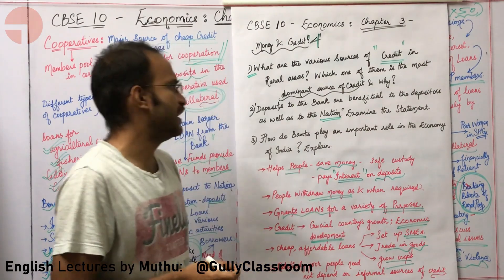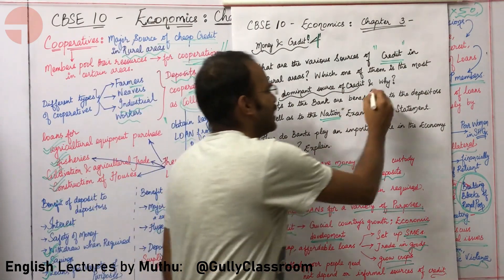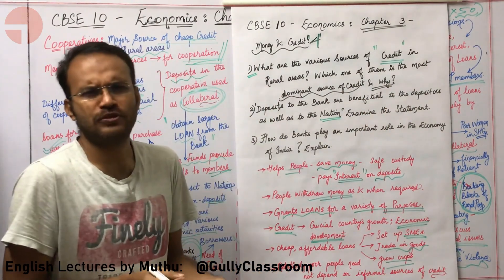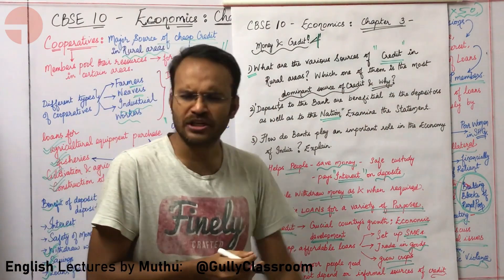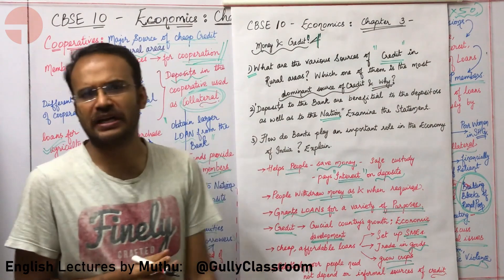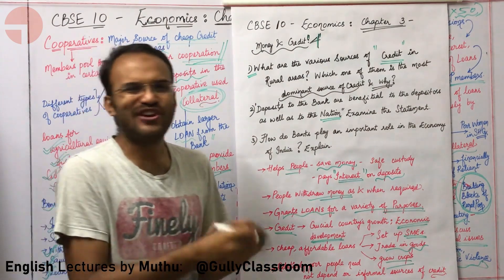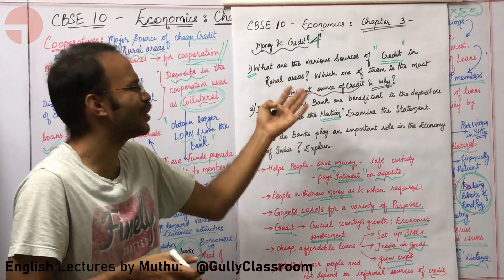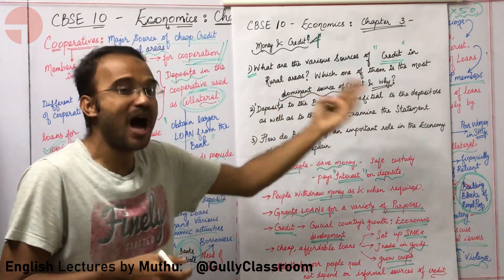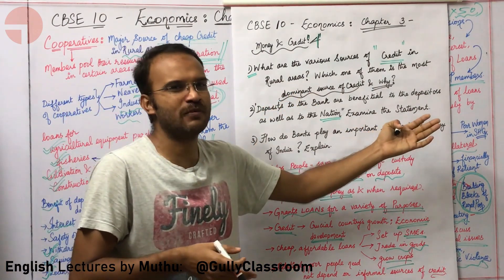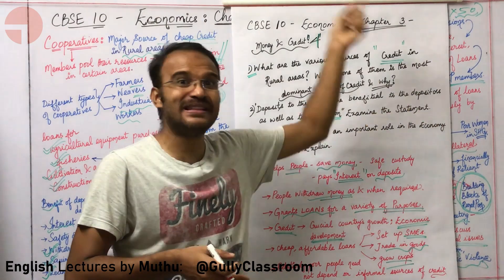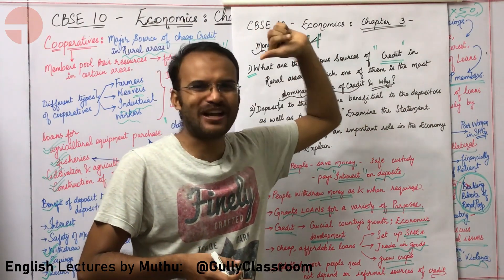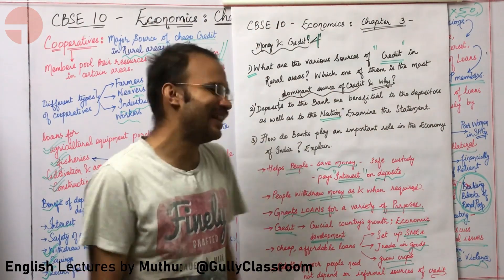The dominant source of credit is informal sources or money lenders, because they do not have any procedures and do not need any collateral. We gave all the reasoning why rural people prefer informal sources in the third lecture, so refer to that lecture.